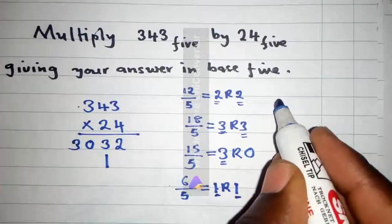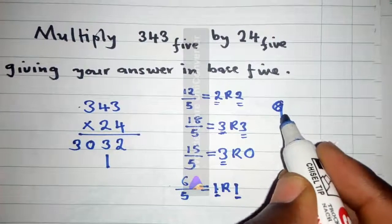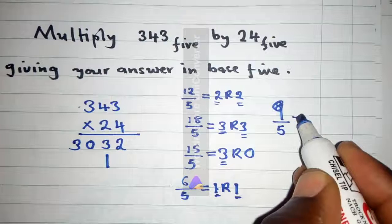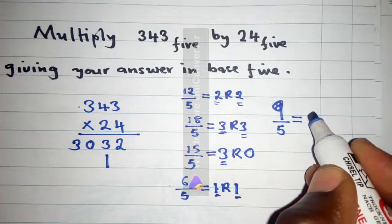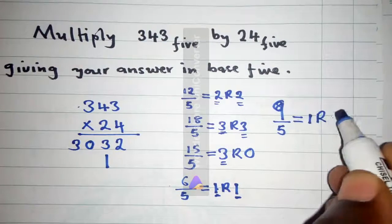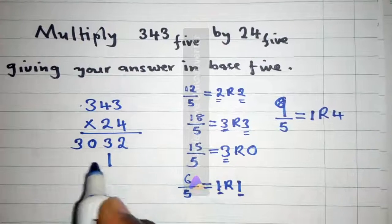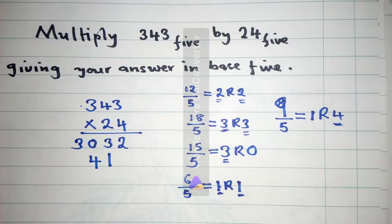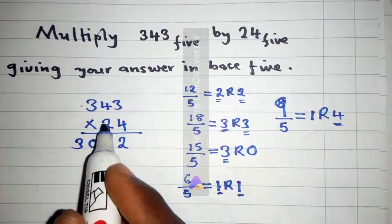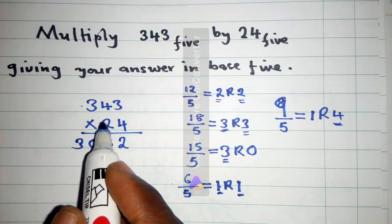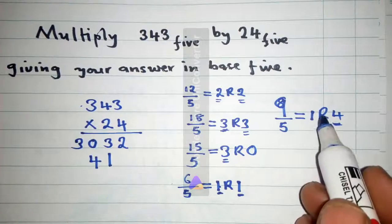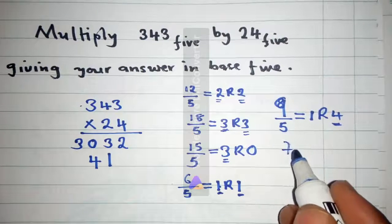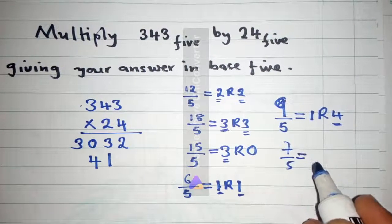8 plus this 1 over here is 9. Divide by 5, it will be 1 remainder 4. So we write our 4 here. In short, our answers will be remainders. And then we say 2 times 3 is 6, plus 1 is 7. So 7 divided by 5 equals 1. 5 can go into 7 one time, remainder 2.